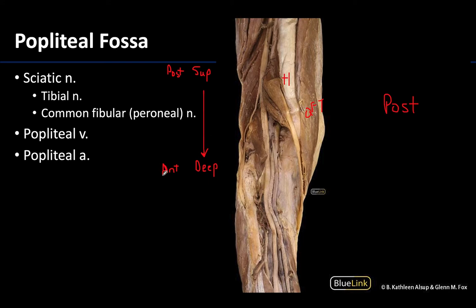The most superficial structure in this region — other than fascia and some small cutaneous nerves and veins which have been removed in this dissection — is the sciatic nerve. The sciatic nerve is the largest nerve of the body and it will fairly superiorly divide into its two terminal branches, as you can see right here where it's splitting. The larger and more medial branch is the tibial nerve, which is one of the most prominent things to see in this region. It looks almost like a continuation of the sciatic nerve and continues to run down the posterior leg as the dominant supply of that region.